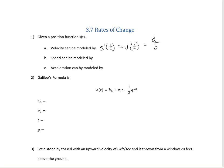Speed can be modeled by the absolute value of the velocity function. Velocity is positive if you're moving away from something, and negative if you're moving towards something. Acceleration — how your velocity is changing — is the second derivative of the position function, or the first derivative of the velocity function, which is distance change over time squared.